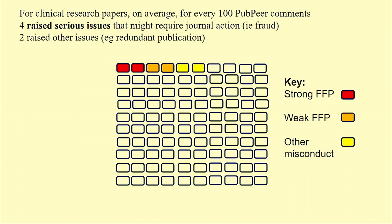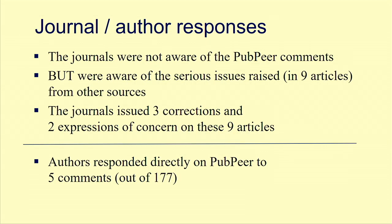To put this in numbers: for every 100 articles commented on, up to four may have serious problems and two additional may have less severe problems. Bear in mind this is based on less than 1% of all published articles being commented on, so the real percentages would need to be weighted accordingly.